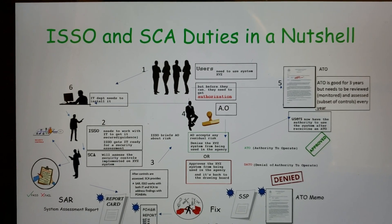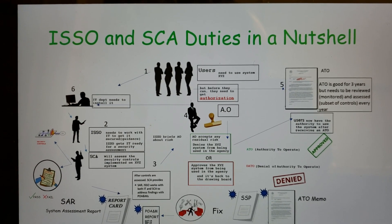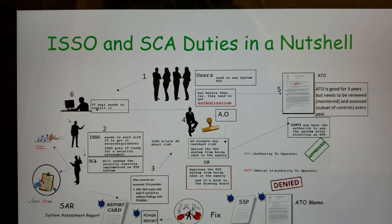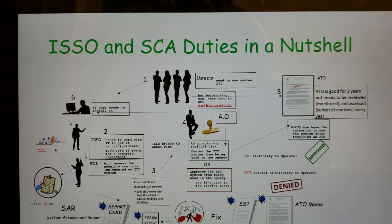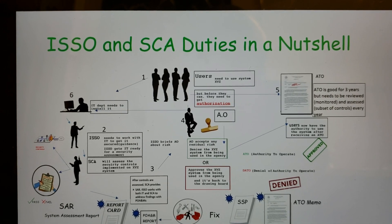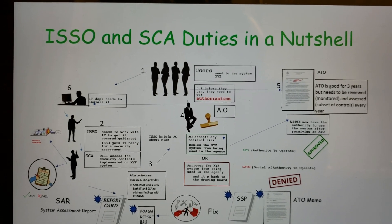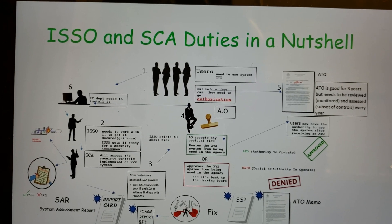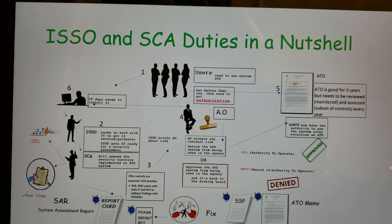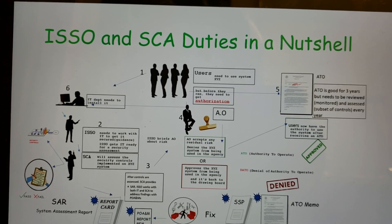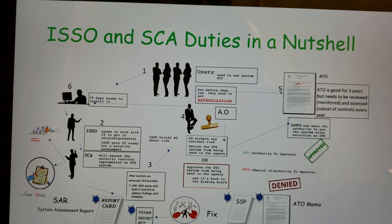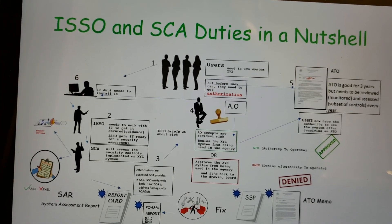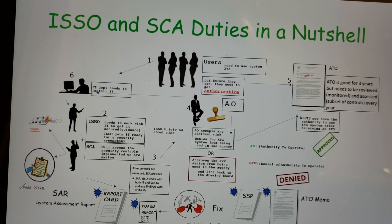Security controls are things you put in place to reduce risk. For example, policies like acceptable use policies — don't download games, don't click on suspicious links — those are security controls. A firewall is also a security control.